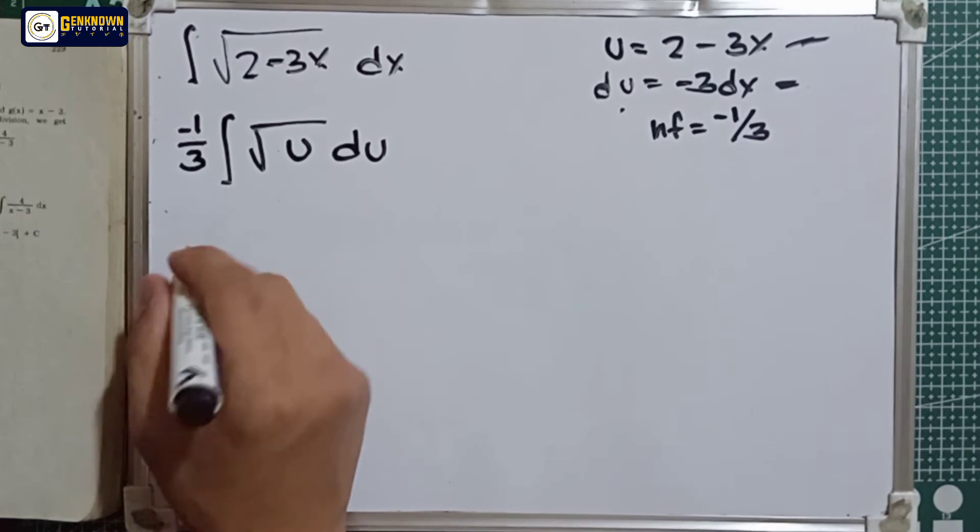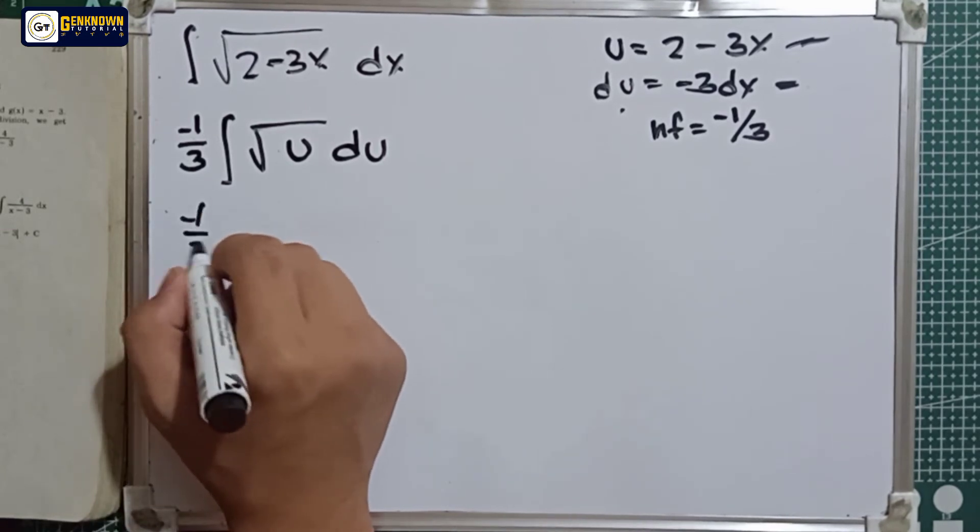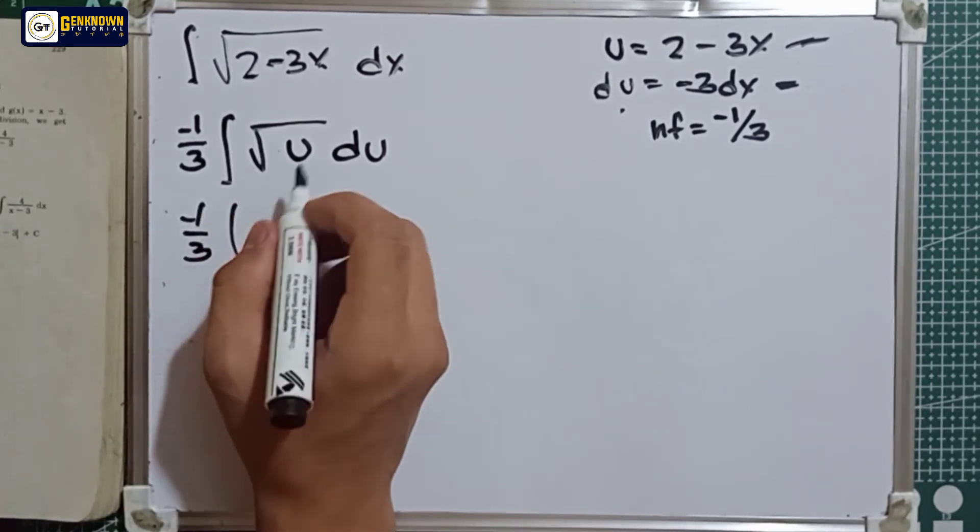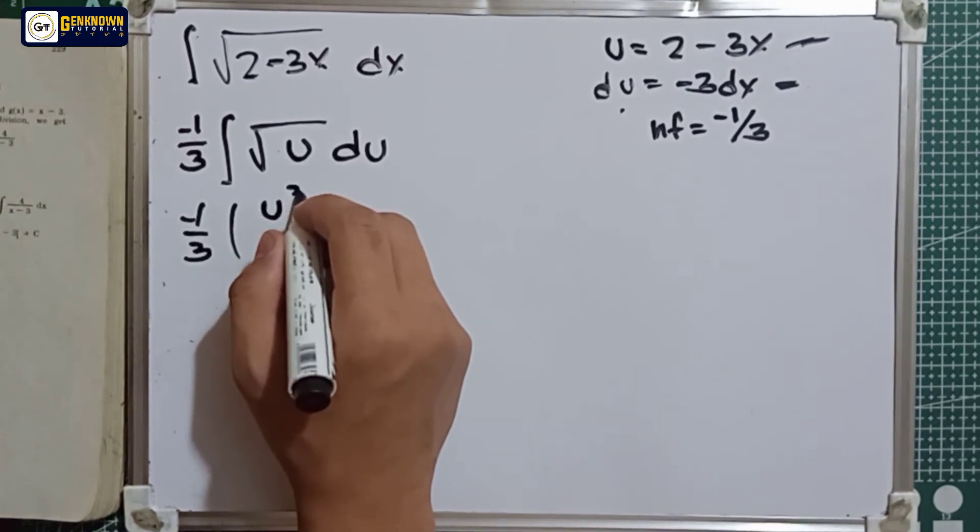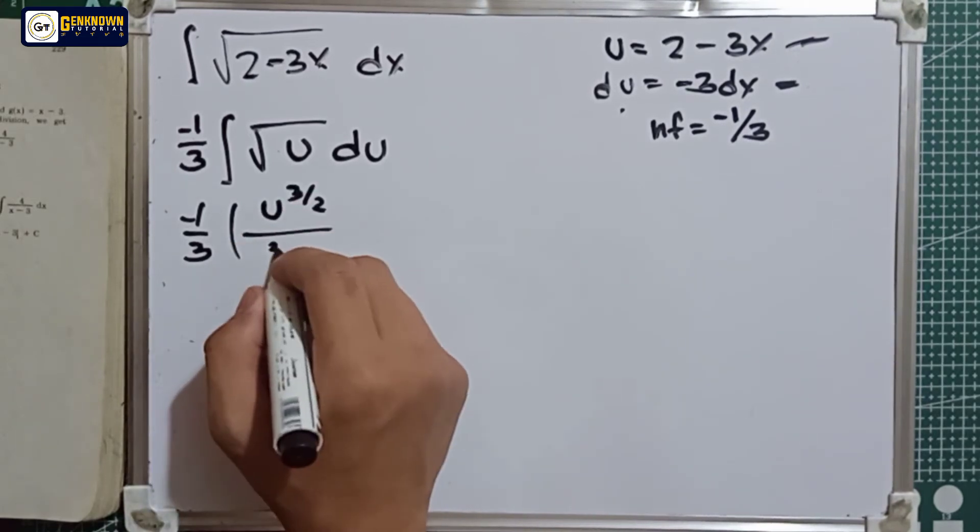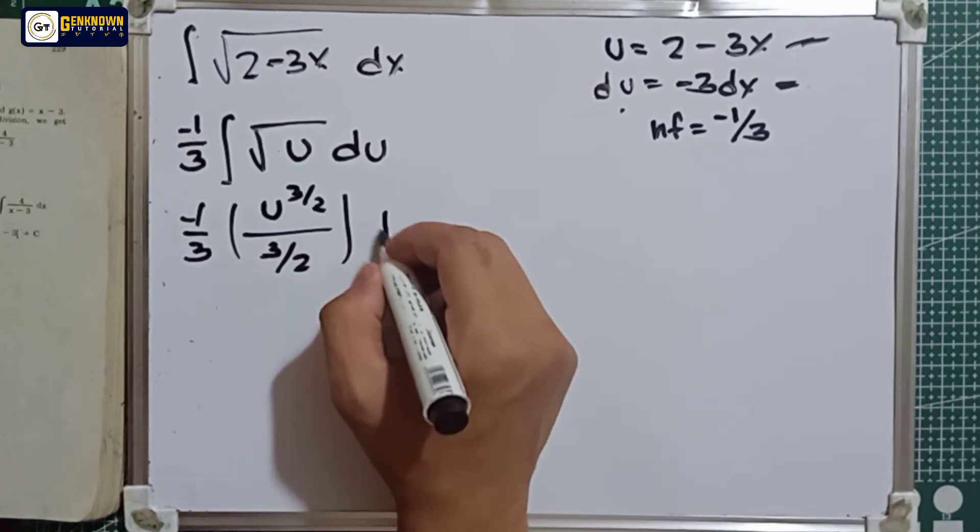The integral is equal to negative 1 over 3 multiply by the integral of u raised to 1 over 2, which is u raised to 3 over 2 over 3 over 2 plus the constant.